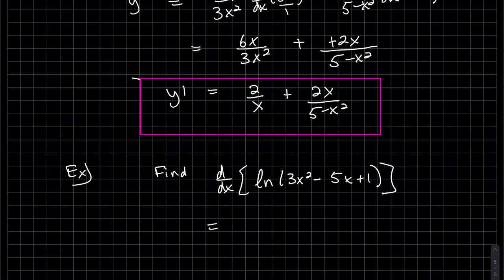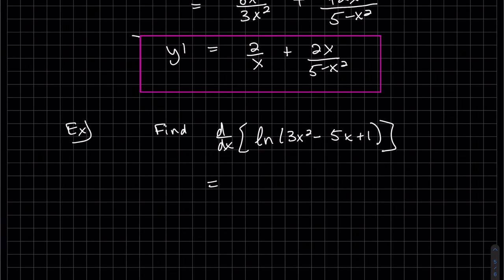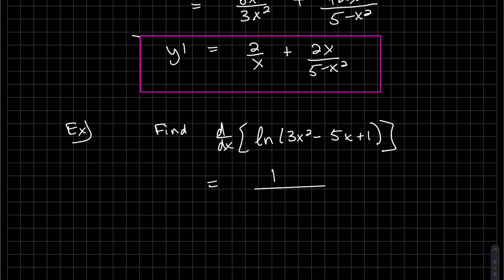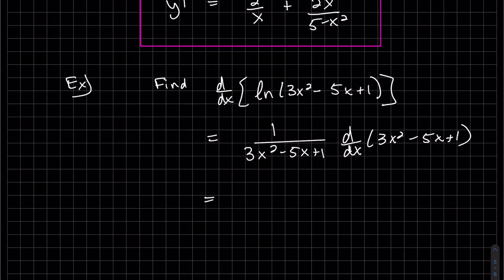We can just find that. It's just the natural log of some function, so it's 1 over that function — just like the derivative of natural log of x is 1 over x. We copy that function and then take the derivative of the inside. Put that derivative on top, and that's our answer.